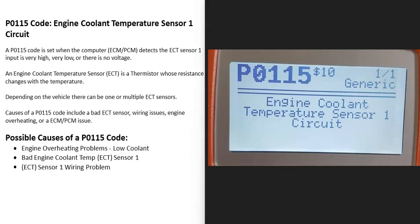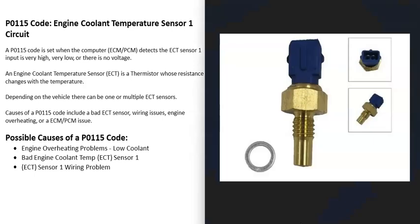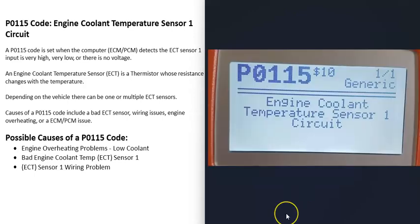Today I'm talking about a P0115 code — what it is and how you go about fixing it. A P0115 code is an engine coolant temperature sensor one circuit issue. Basically, there's an engine coolant temperature sensor that reports back to the computer what the temperature of the engine is, and when you get this code the computer is seeing some kind of problem with this sensor.